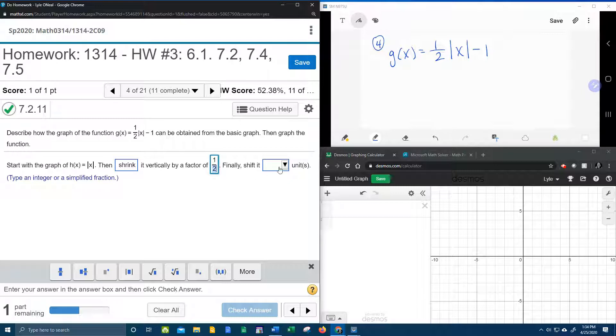And it says finally it's going to shift it, and we have some choices. You need to know the number after the function, here the number outside of the absolute value, that is your vertical shift, and negative one, since that's a vertical shift, that's going to be down one. Minus is down.